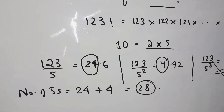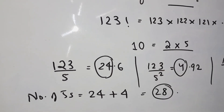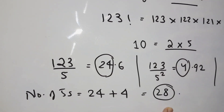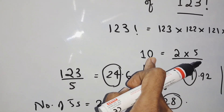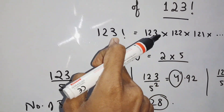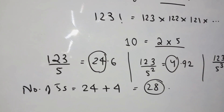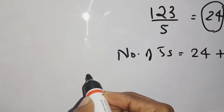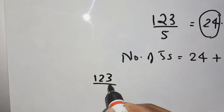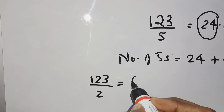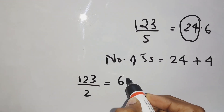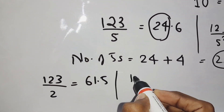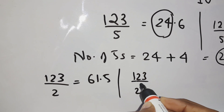Now we have to find, similarly, the count for 2s. Then we can find how many pairs of 2 × 5 we can make, which gives the number of 10s — that is, the number of trailing zeros. So we take 123 ÷ 2, which gives 61.5.